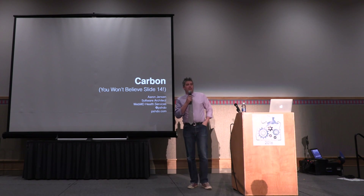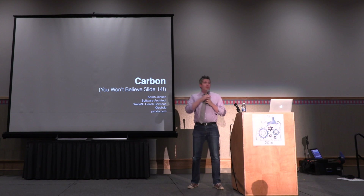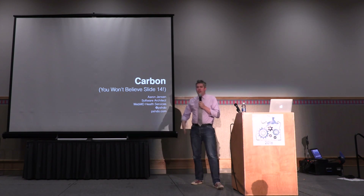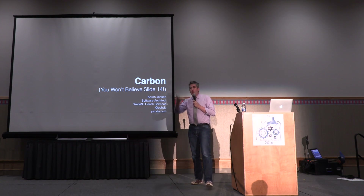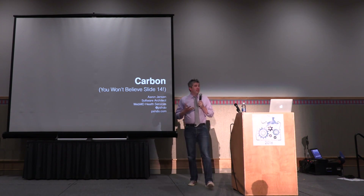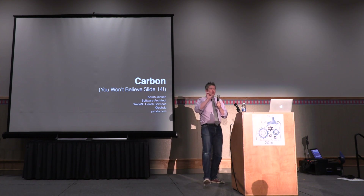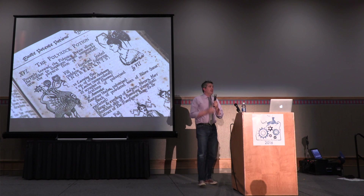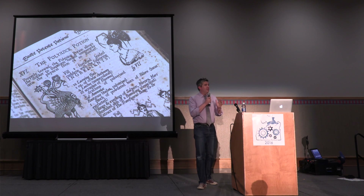One of the first things you get as a developer when you show up is a checklist of things to do to get your workstation set up so you can run the software. And these things are really scary, because sometimes you see what looks like blood marks on the pieces of paper, or down in the corner somebody's written, 'the cake is a lie.' So it's kind of scary.